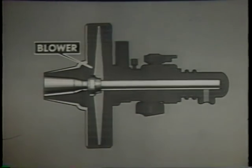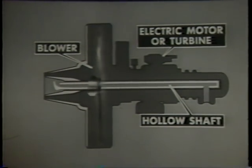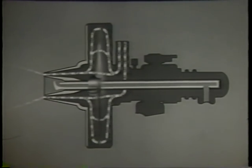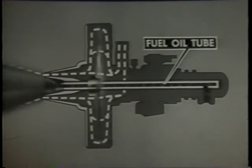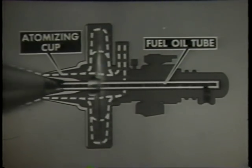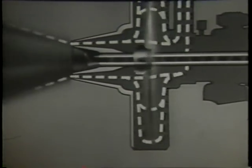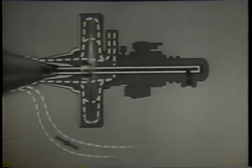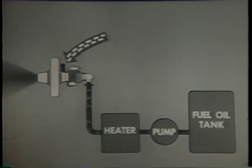In the rotary cup burner, a fan or blower is mounted on a hollow steel shaft. An electric motor or steam turbine turns the shaft and blower at high speed, providing a blast of air around the burner nozzle. The oil, under low pressure, enters through a stationary fuel oil tube inside the rotating hollow shaft and is discharged into the rotating atomizing cup. Centrifugal action forces the oil against the inner surface of the atomizing cup and causes the oil to leave the rim as a hollow cone. The meeting of the oil and the air from the blower further atomizes the oil. Additional air needed for proper combustion enters through an air door in the furnace wall. As in all burners, you control the firing rate by controlling the amount of fuel oil and air going to the burner.